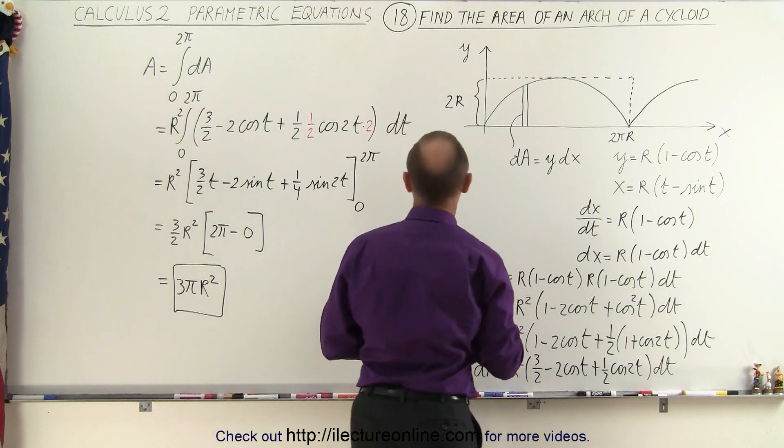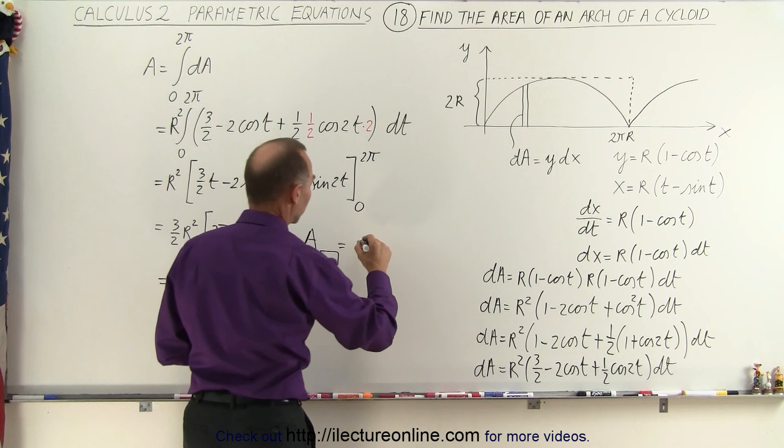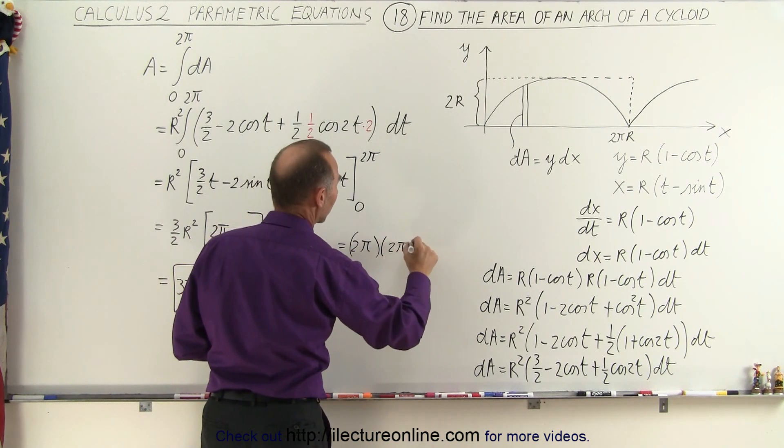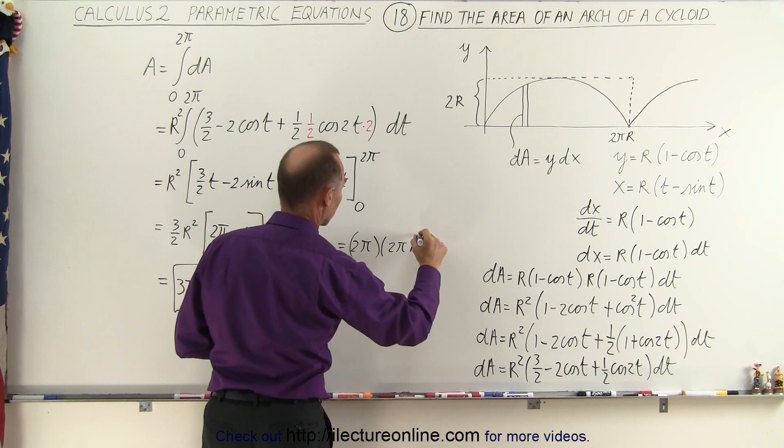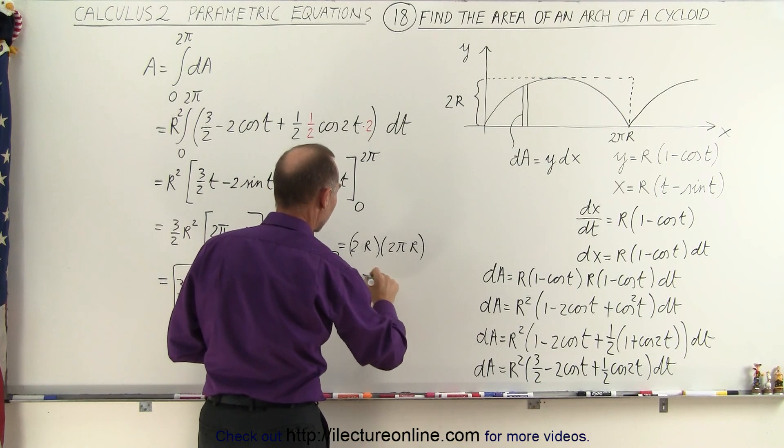The rectangle would have height equal to twice the radius and the length of the rectangle here would be 2 pi r. So the area of the rectangle would be equal to the product of 2 r times 2 pi r. So this would be equal to 4 pi r squared.